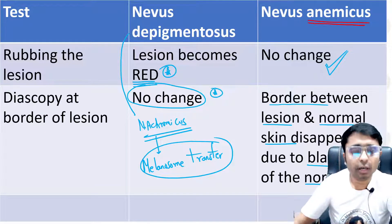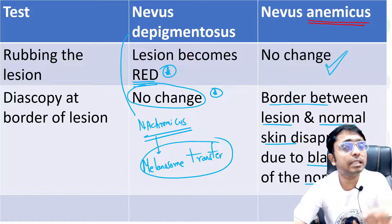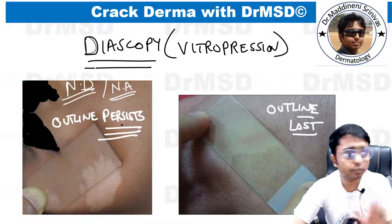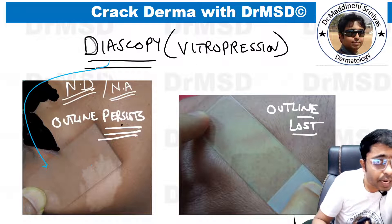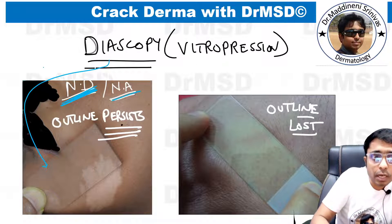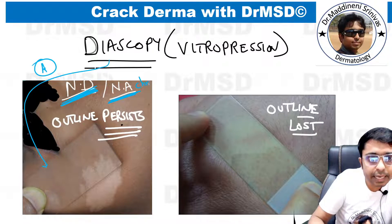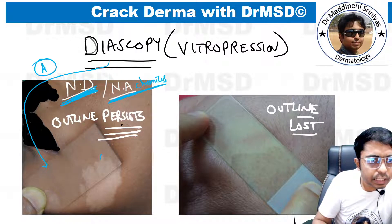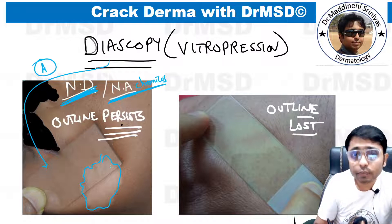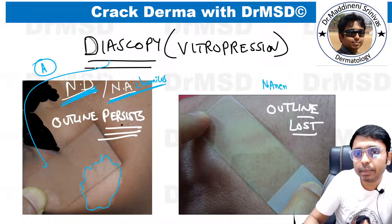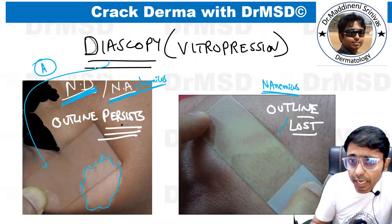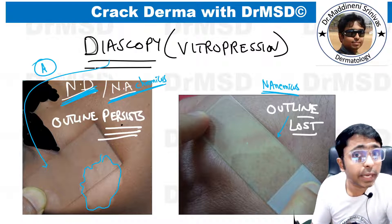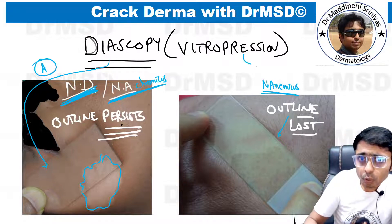In Nevus Depigmentosis, because there is no effect on blood vessels, the lesional and surrounding normal skin show no change on diascopy. Diascopy involves applying pressure with a glass slide. In the first picture — Nevus Depigmentosis, also called Nevus Achromicus — you can see the lesional skin, and on application of pressure with the glass slide, there is absolutely no change. In the case of Nevus Anemicus, there was previously a visible lesional hypopigmented area with surrounding normal skin, but after dioscopy the outline is completely lost and you cannot distinguish the lesion from normal skin.